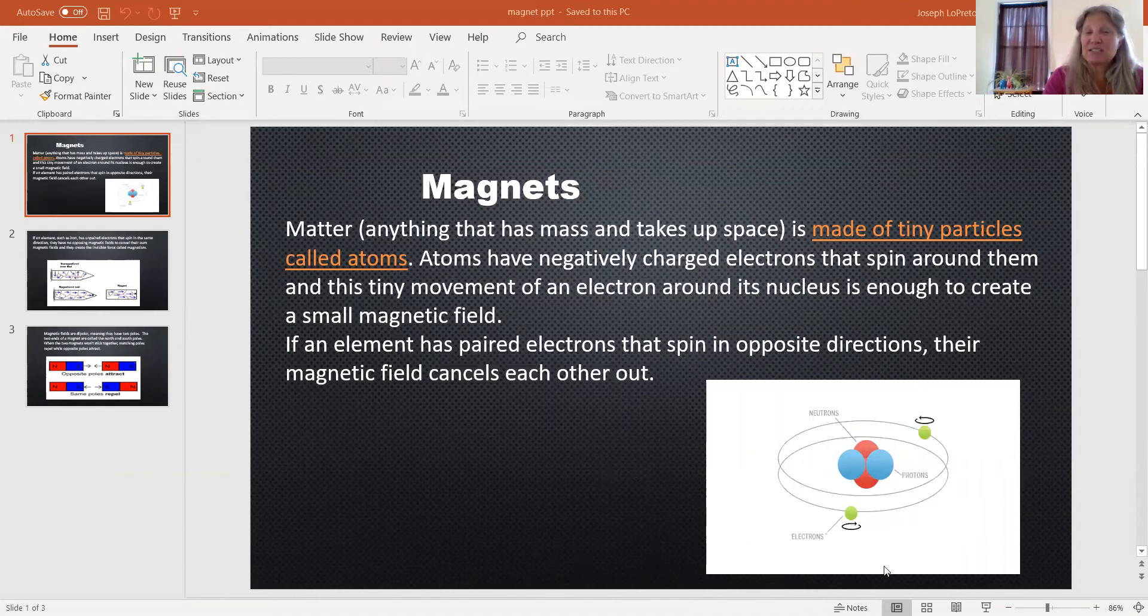And as they spin around, they spin around fast enough to make a magnetic field. If it pairs off, it cancels each other out. So in this case, we have two. They're going in two different directions, so they're going to cancel each other out.